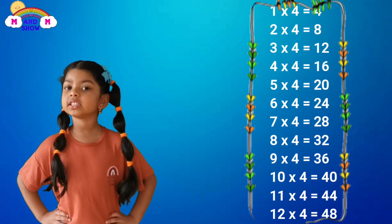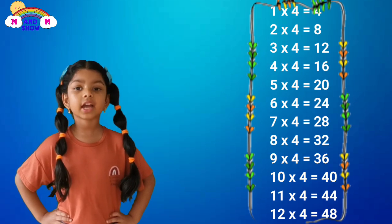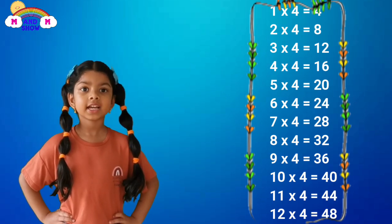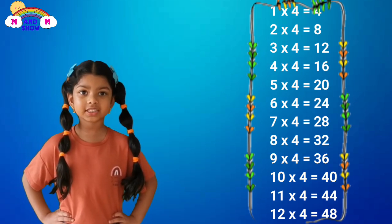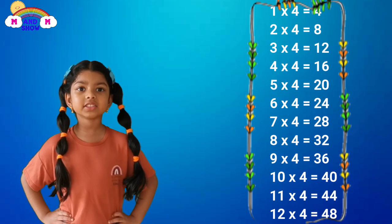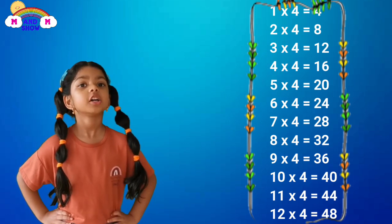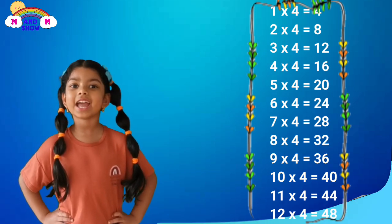Eight time four is thirty-two, nine time four is thirty-six, ten time four is forty, eleven time four is forty-four, twelve time four is forty-eight.